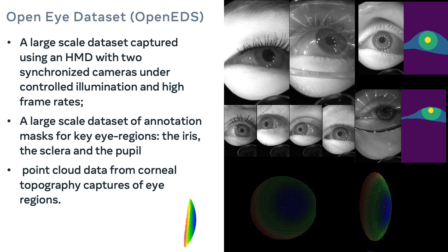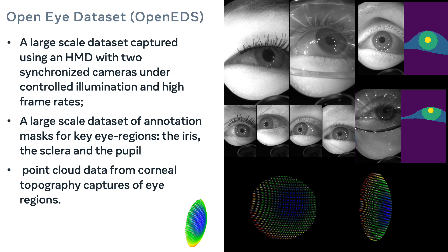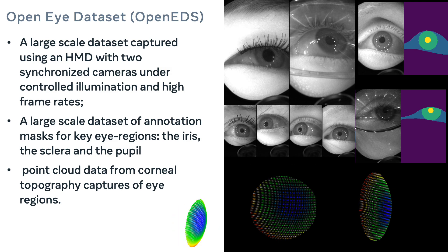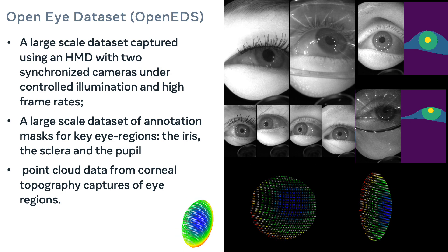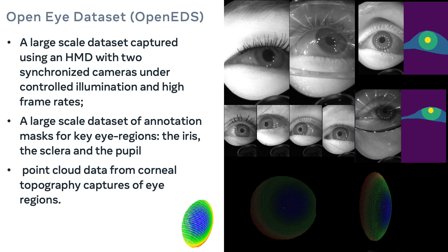The OpenEye dataset is a large-scale dataset captured using a head-mounted virtual reality device with two egocentric synchronized cameras that operate under controlled illumination conditions and at a high frame rate of 200 Hz. A large cohort of eye images in the dataset are hand-annotated to semantically label key eye regions — sclera, pupil, and iris. In addition to 2D eye images and sequences of unlabeled eye images, we also provide point cloud data for corneal topography captures.